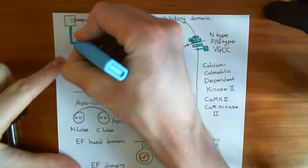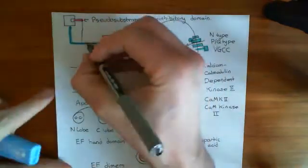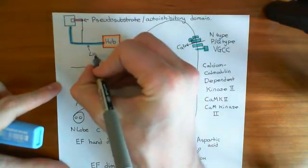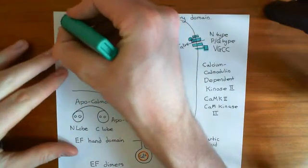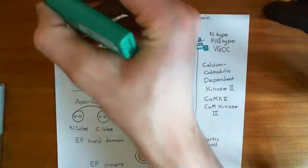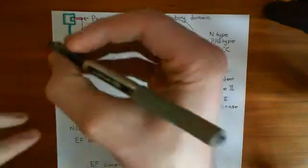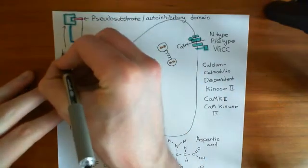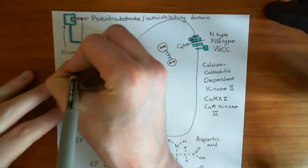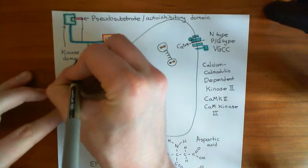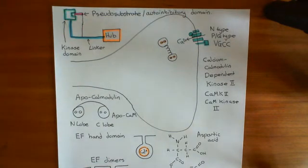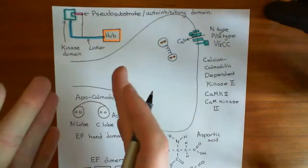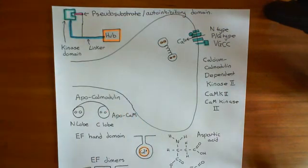In blue we have the linker region, and in turquoise the kinase domain. This enzyme is going to be activated by calcium-calmodulin complexes and will then phosphorylate synapsin proteins, allowing release of those synaptic vesicles stored in the reserve pool so they can migrate to the active zone. We'll continue our discussion of calcium-calmodulin-dependent kinase 2 in the next video.